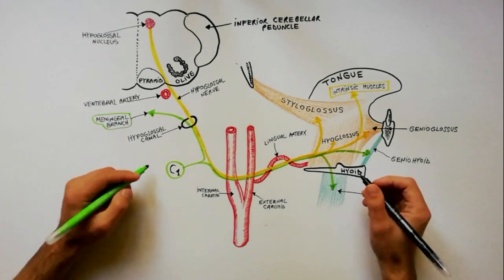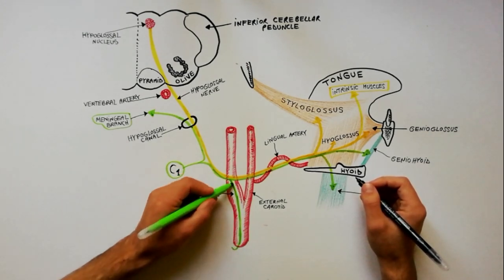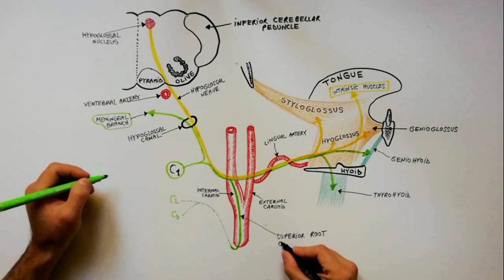Finally, as the hypoglossal nerve crosses the internal carotid artery, it gives off the superior root of ansa cervicalis.